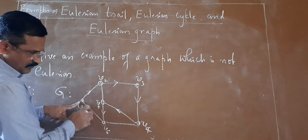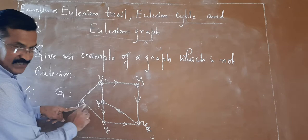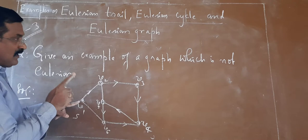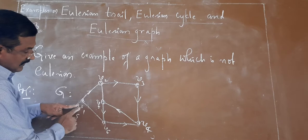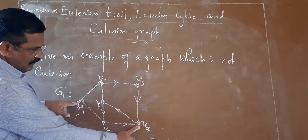If you reach this way: your starting point is V1 and the ending point is V4. But for an Eulerian cycle, the starting and ending point must be the same. If you started at V1, you must reach V1 only. So if you go this way, your starting and ending points are different. Therefore it doesn't contain an Eulerian cycle.